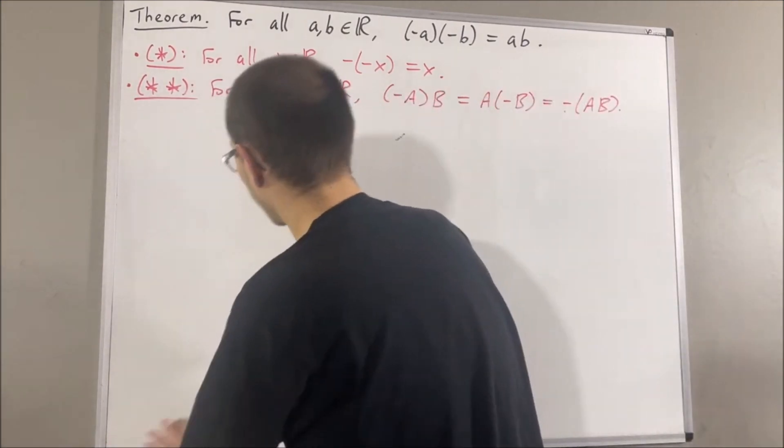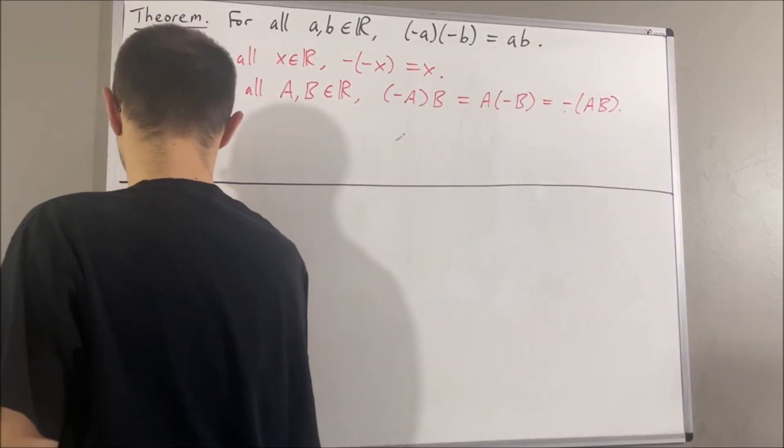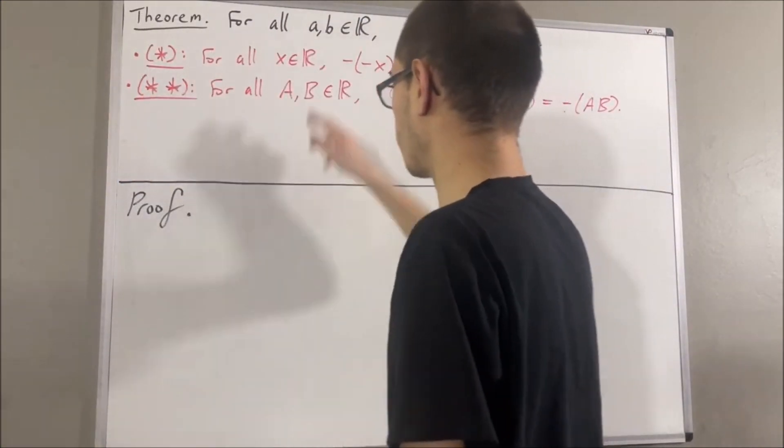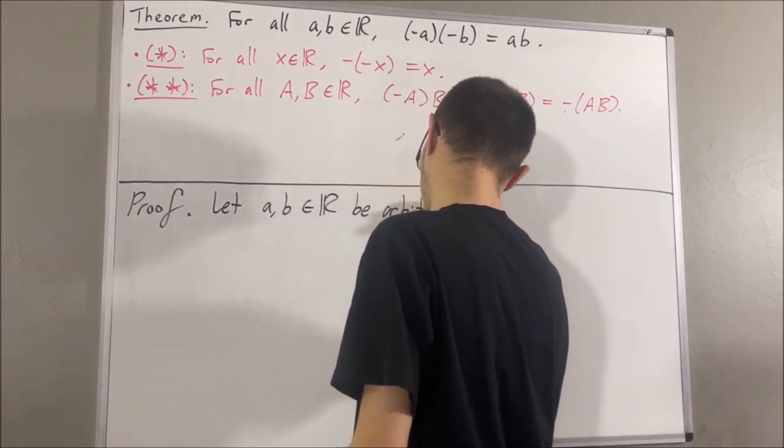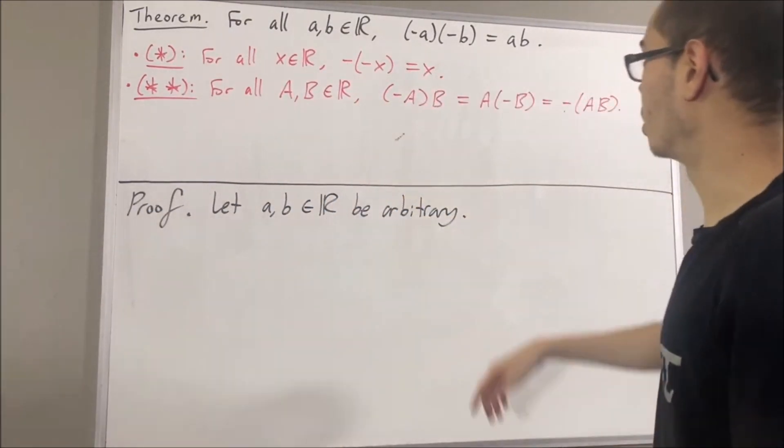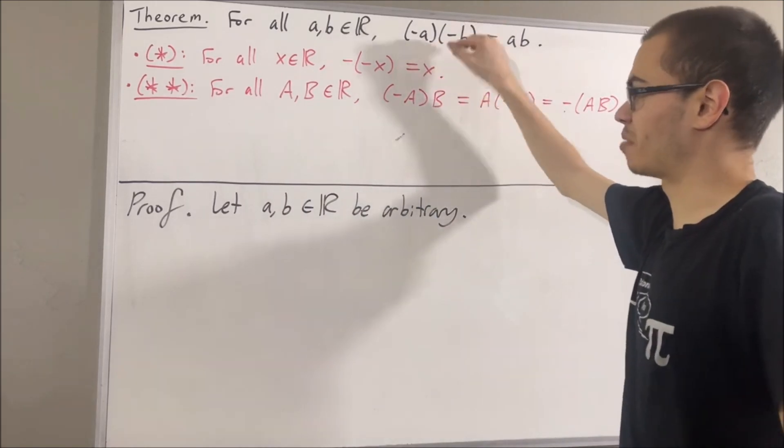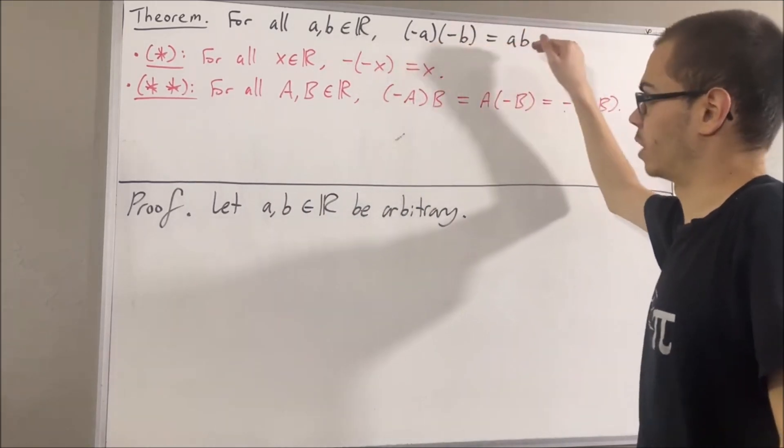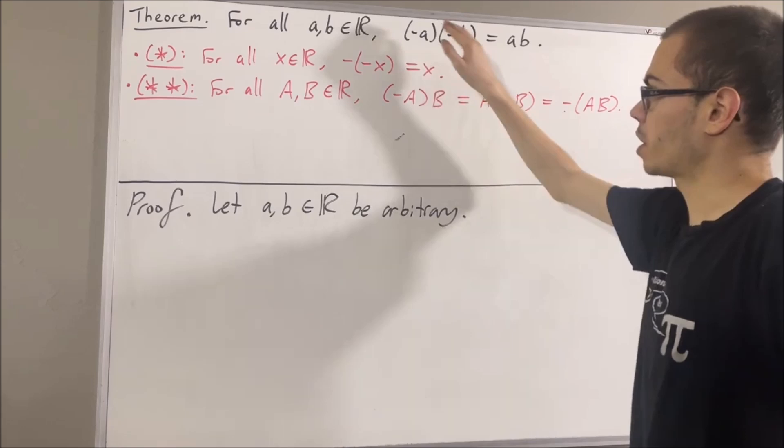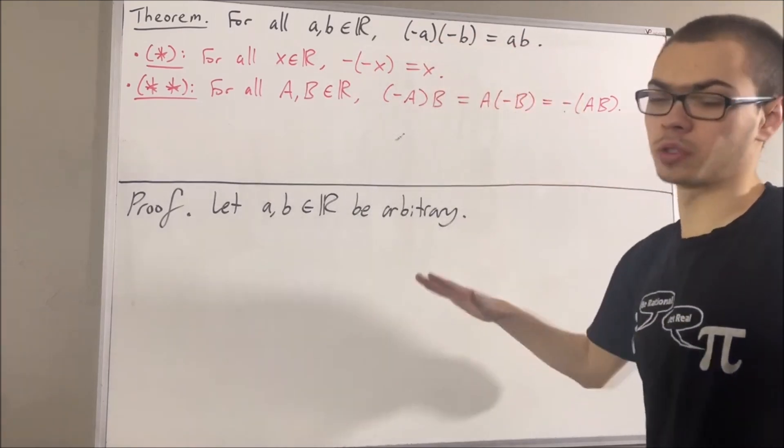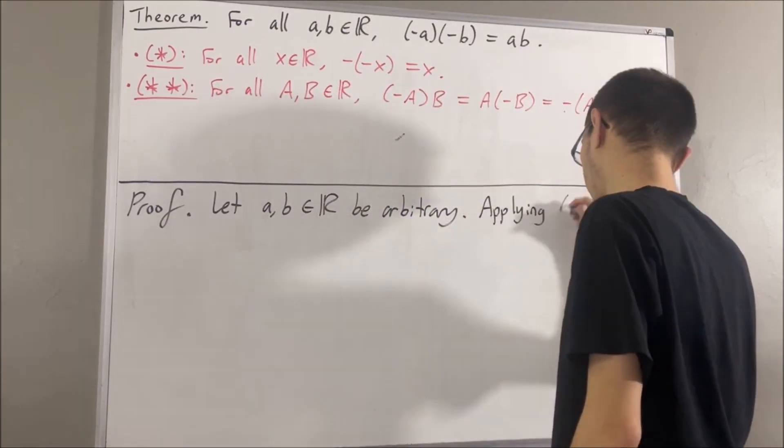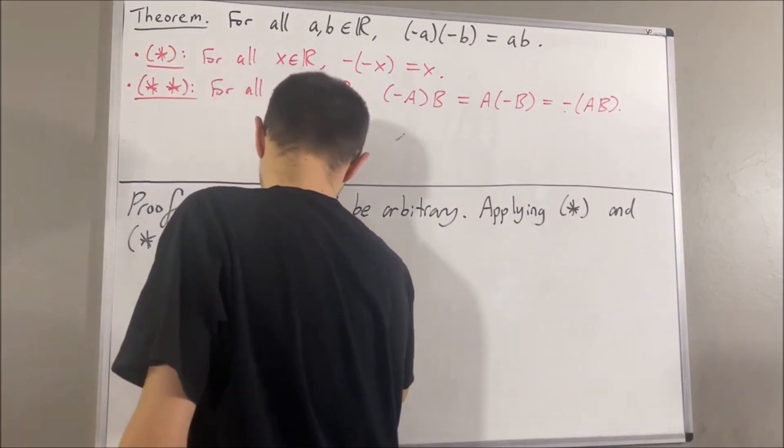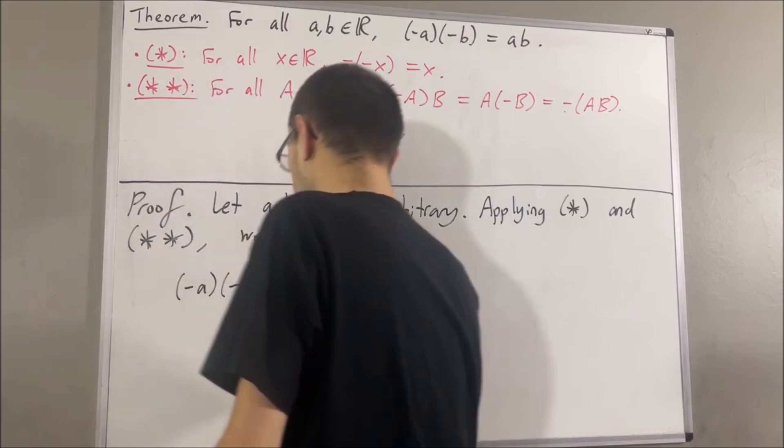Okay, so now let's get into proving this theorem. To start out the proof, let's first give ourselves two arbitrary real numbers A and B. From here, the whole goal is to show that the negative of A times the negative of B is equal to AB. And we're going to show that this is true through a chain of equalities, and we're going to be applying these two statements.